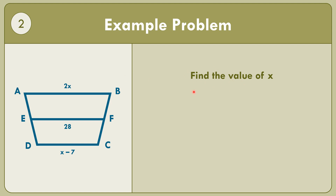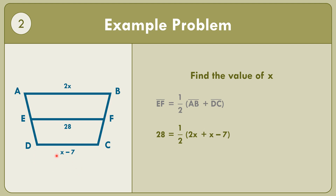In example number two, we have the value for the median of the trapezoid. Let us find the value of x. Segment EF equals one-half times the quantity segment AB plus segment DC. Segment EF is 28, copy one-half. Segment AB is 2x and segment DC is x minus 7. Afterwards, let us multiply both sides by 2, giving us 56 on the left. On the right, 2x plus x equals 3x, copy negative 7.